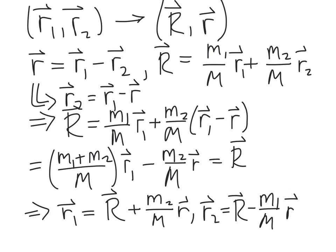Remember that we want to go from keeping track of the individual positions of the two particles to using this relative coordinate system — capital R being the center of mass coordinate, little r being the difference in positions of the two masses. Little r is the difference in the two displacement vectors, big R is given by the center of mass expression.